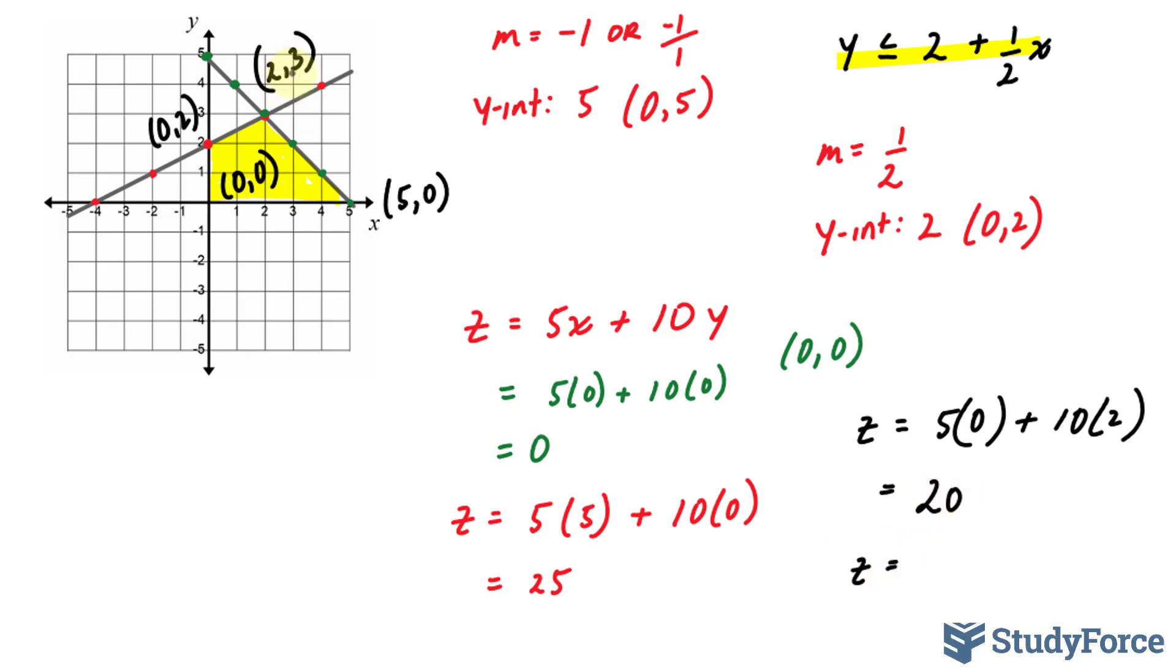And lastly, z equals 5 times 2 plus 10 times 3. This gives us a total of 40.